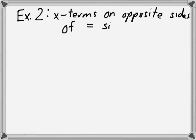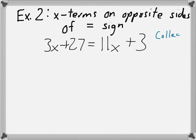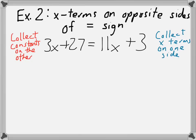Let's look at another example. In this second example, we'll look at when x terms are on opposite sides of the equal sign. Like, in 3x plus 27 equals 11x plus 3. Our strategy when we have x's on opposite sides is to collect the x terms on one side of the equation and collect all of the constants or numbers on the other. Because the larger x is on the right side, let's collect the x terms on the right side.